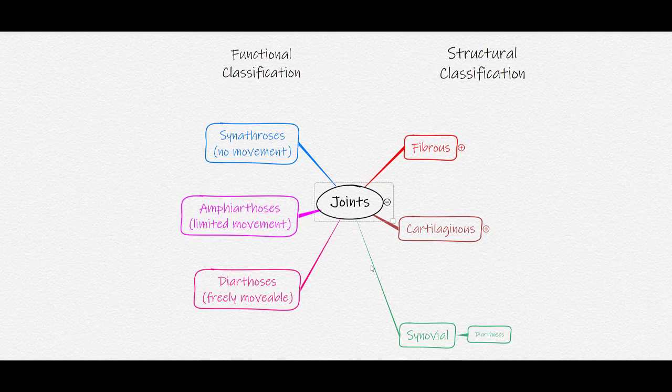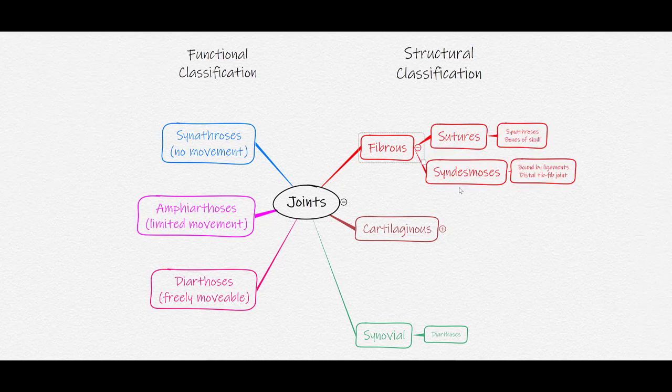Fibrous joints do not have a joint cavity and are bound by connective tissues composed predominantly of collagen fibers. There are two types of fibrous joints: sutures and syndesmoses. Sutures are where the bones are essentially fused together and are found in the skull and pelvis. Syndesmoses are joints bound by ligaments and may have fibrous tissue between them, but no joint capsule.